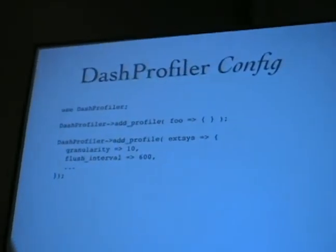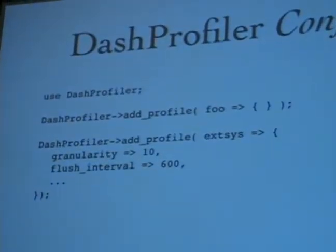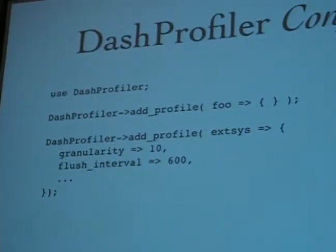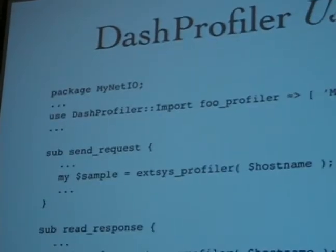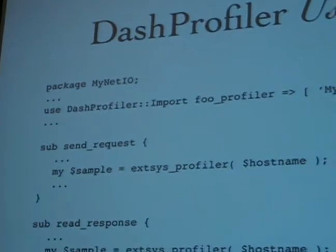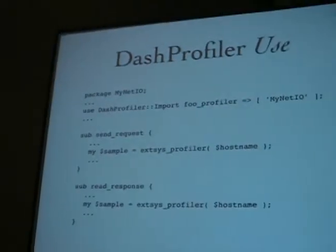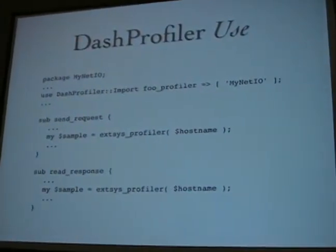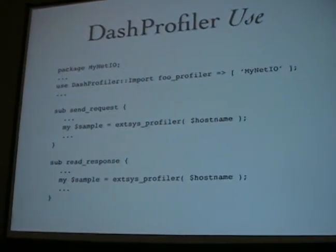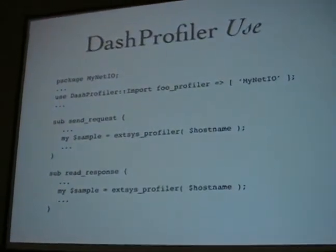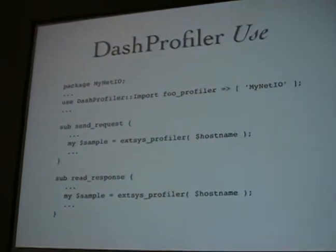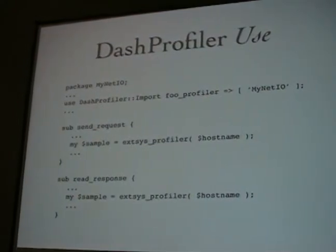I wrote this bit of code called dash profile. This is a bit of configuration where you can create some profile objects. There are various modules with various interfaces — I'm showing you the one where you give names to things. Then in your code, in some network I/O module, you add one line to import a profile and give it a context for this particular file or area of your code. And then in your functions, you just add one line — that xsys profile being imported — and that one line is all you need to instrument the code.